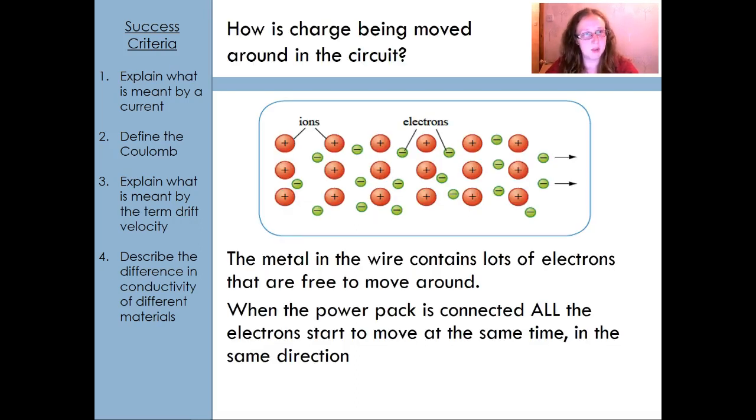So how is it that we are moving charge around in circuits? Well it depends on what type of circuit. If it is a metal wire it will be the electrons that are doing the moving. So you have the metal ions in your lattice here like this and then we've got a whole load of free or delocalized electrons that are quite happy just to move around. And as soon as we connect a power supply all those electrons will start moving together.